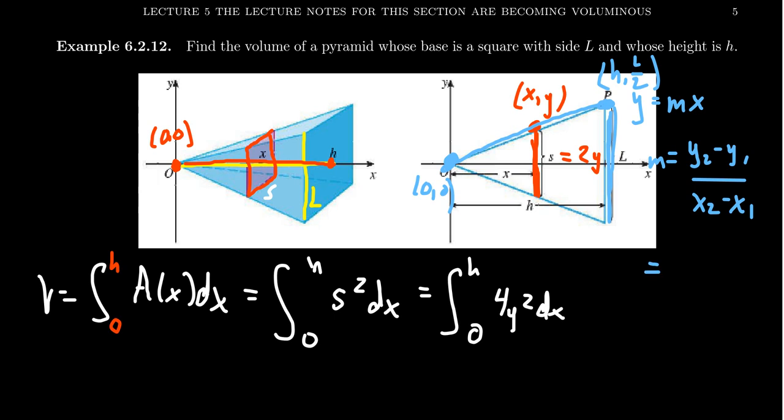And so putting those things in there, we're going to get one-half L minus zero over h minus zero. That simplifies just to be L over 2h, what you see right there. And so then putting that together, we're going to put this L over 2h in for y right there.